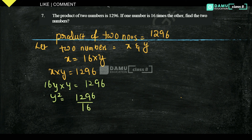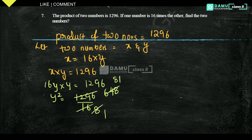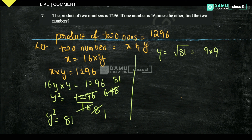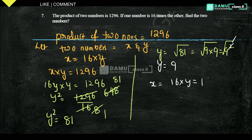So y squared equals 81, then y equals square root of 81, which is 9 into 9, that is 9 squared. Square root and square cancel, so y equals 9. Then x equals 16 into y, that is 16 into 9 equals 144. So the two numbers are 9 and 144. Thanks for watching, please subscribe.